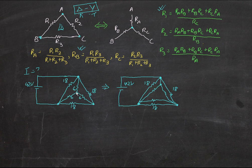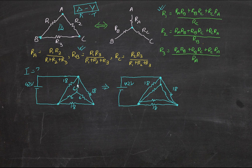For this circuit, we first convert the inner Y into a Delta. Now applying the formula — we are converting from Y to Delta, so we use the green formula. Ra·Rb is 6 times 6. Since all resistors are the same value, we multiply by 3 to get 108, then divide by Rc which is 6, giving us 18. So we get 18 everywhere.